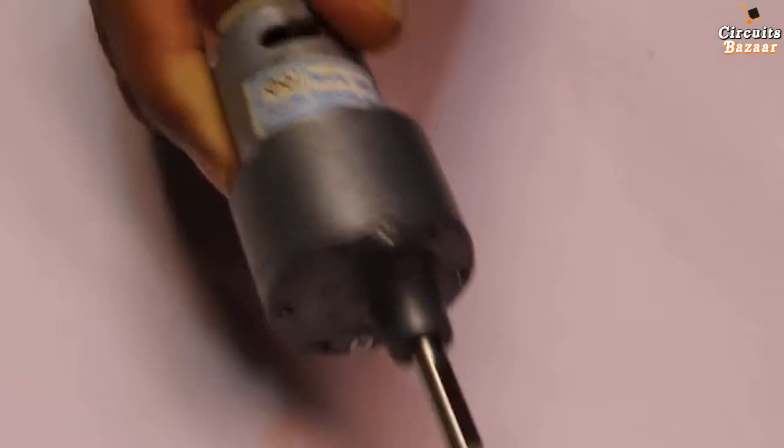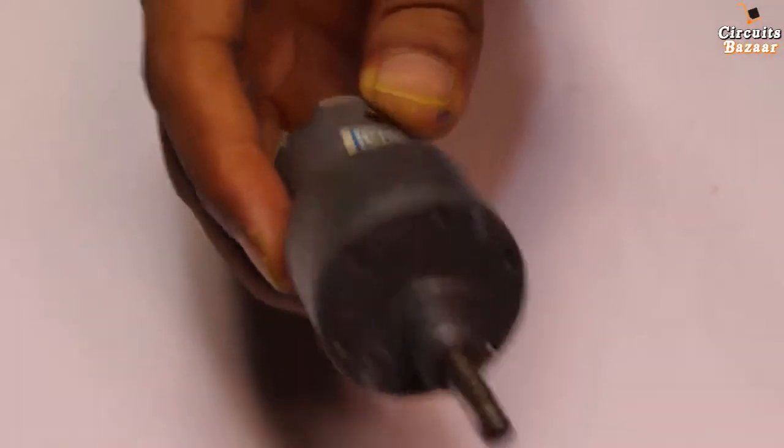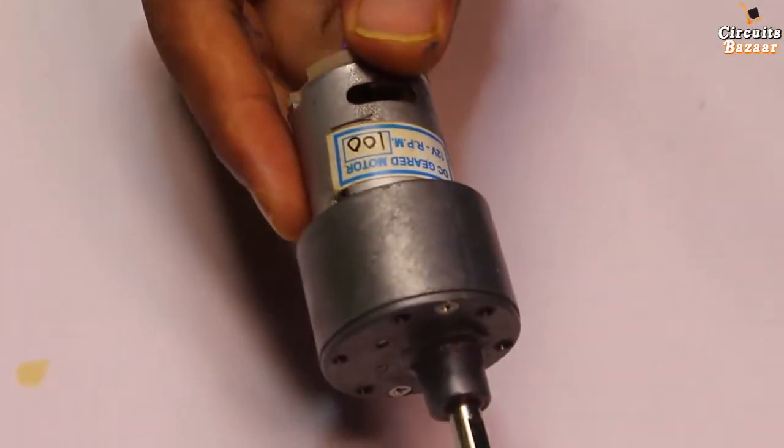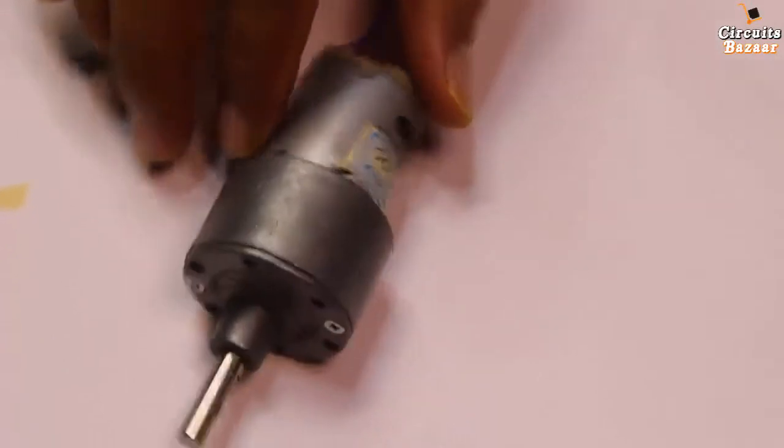Basically, Johnson's DC gear motors are used for high RPM or high speed and high torque, right? The gears inside Johnson's DC gear motor are made of metal and they have very high torque. So today we are going to see what's inside this Johnson's DC gear motor.